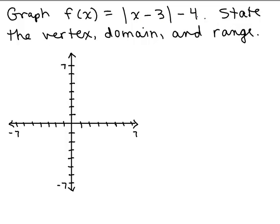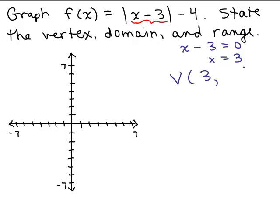We want to do it the easy way to find the vertex. We see what makes the absolute value 0, because that will be the minimum — the smallest number that will go in the absolute value. So we take x minus 3, set it equal to 0, and that gives us the x-coordinate of the vertex. Now if we plug in 3, we'll be able to figure out what y value goes with that. So if we put in 3 for x, this absolute value becomes 0, so we have 0 minus 4. So the vertex will be (3, -4), which is right here.